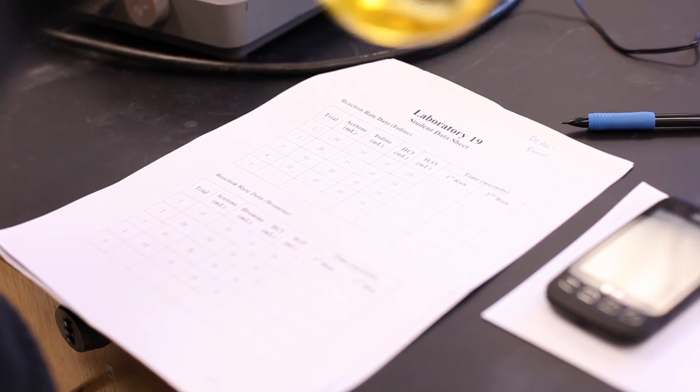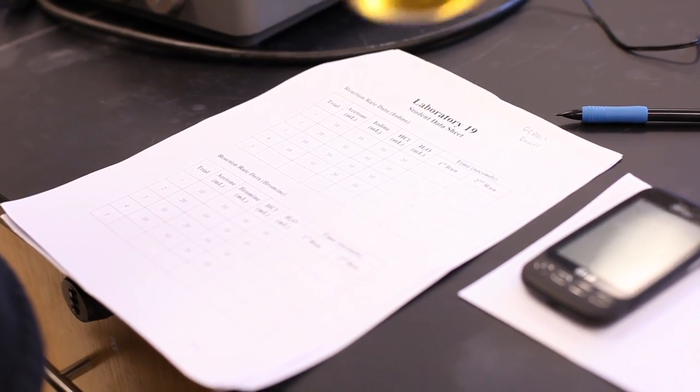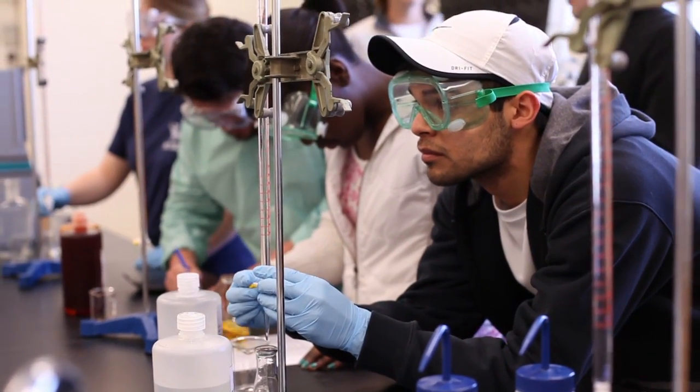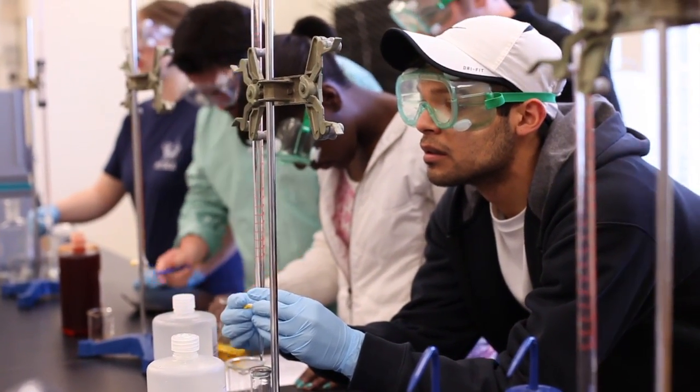With Chem 21, a student can take their data, whether it's good or bad, and obtain feedback and an automatic grade on the calculated answers derived from their data.